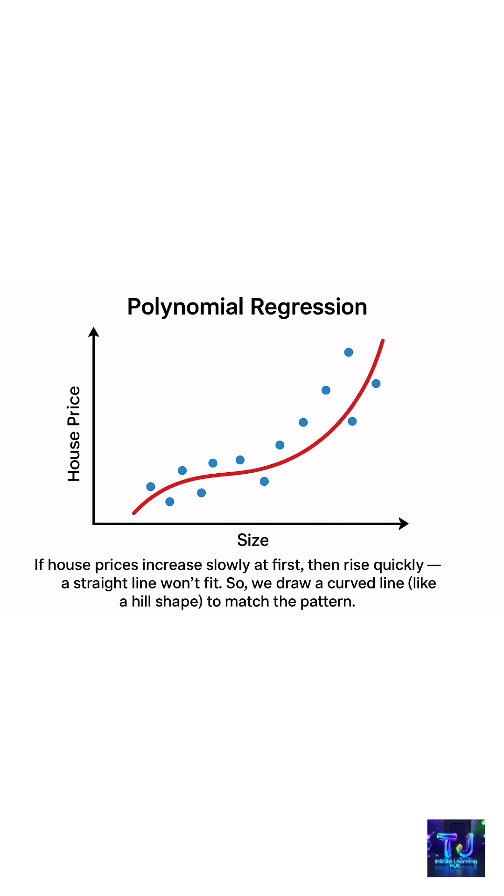Next is polynomial regression, which is useful when data does not follow a straight line. Example: if house prices increase slowly at first then rise quickly, a straight line won't fit. So polynomial regression finds the best curve to fit the data.